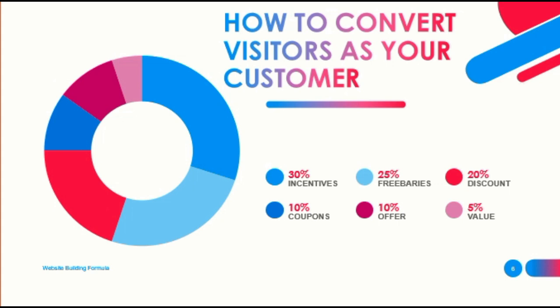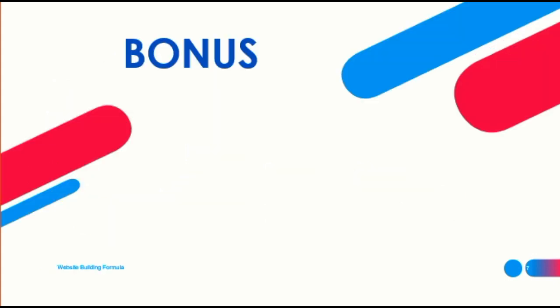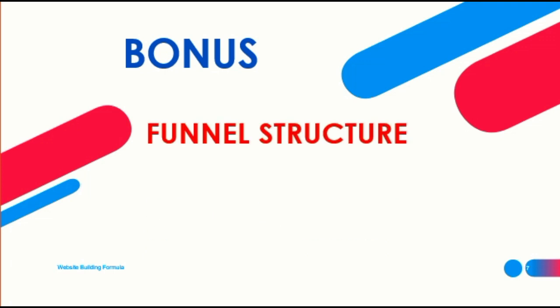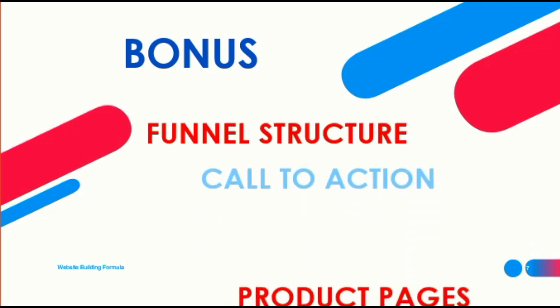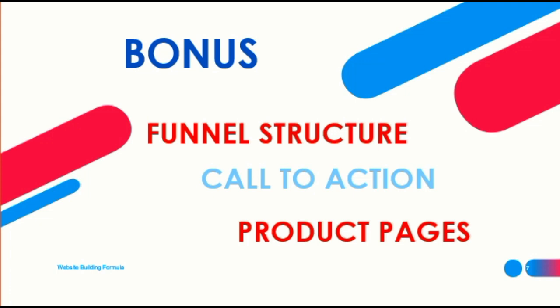Your unique selling point should be clearly visible on your home page and preferably repeated on all of your other pages. Visitors need to understand why you are different from the rest and why they should choose you over your competitor. As a bonus, before building your website, you should be ready with your funnel structure — identify your important pages, usually the call-to-action pages and product pages. If you are running an e-commerce website, make sure everyone can be redirected to the product page.